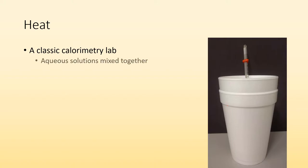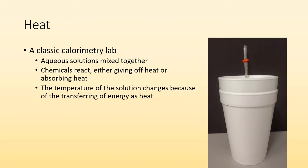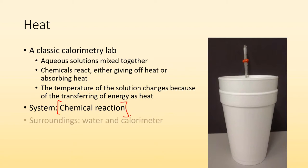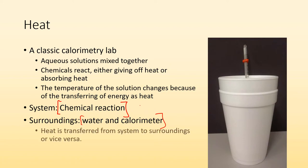So let's talk about heat. A classic calorimetry lab is you have an aqueous solution. You got two different solutions with different chemicals in it and you mix them together. The chemicals react and they're either going to give off heat or they're going to absorb heat, which means the temperature of our solution is going to change. So then you can measure that temperature change and figure out what does that mean for the energy change of my chemicals. So in this example, the system might be the chemical reaction. And then the surroundings, the thing that I'm going to measure, might be the water in the calorimeter. So I'm going to look at the calorimeter and the temperature change so I can figure out the heat change of my system.